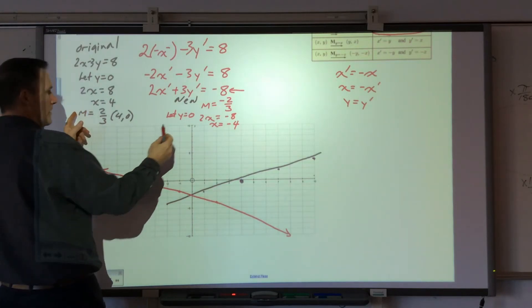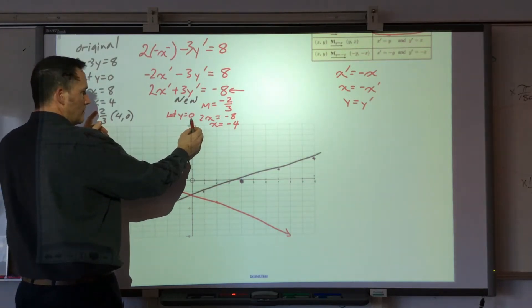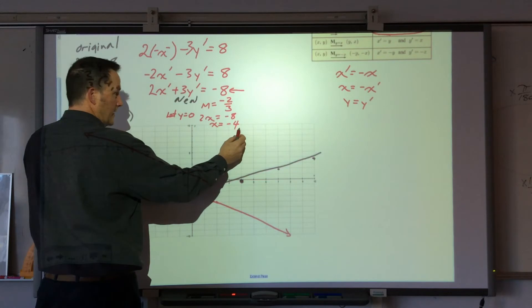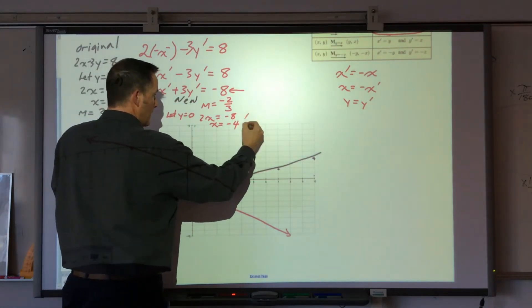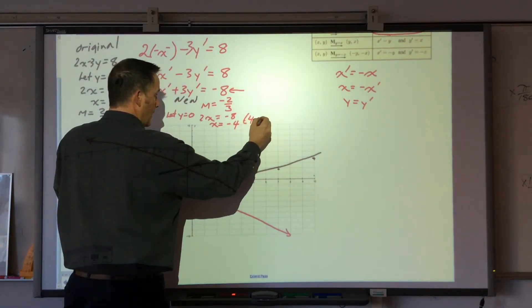I did the same thing as I did over here. I let y equal 0, and that allowed me to solve for x equals negative 4. So that gave me the point negative 4 and 0.